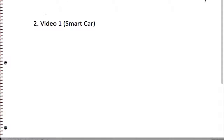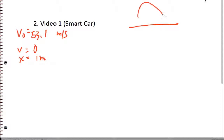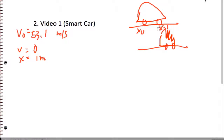For the second problem, we had a smart car going at 70 miles an hour, which is 53.1 meters per second for its initial speed. It smashed into a wall, and we found that this happened over a distance of about one meter for the compression. So X-naught is zero and X is 1. The acceleration and time are both unknown.